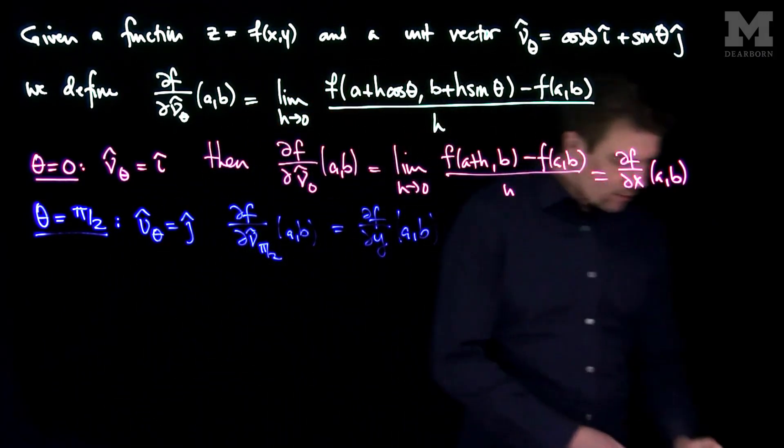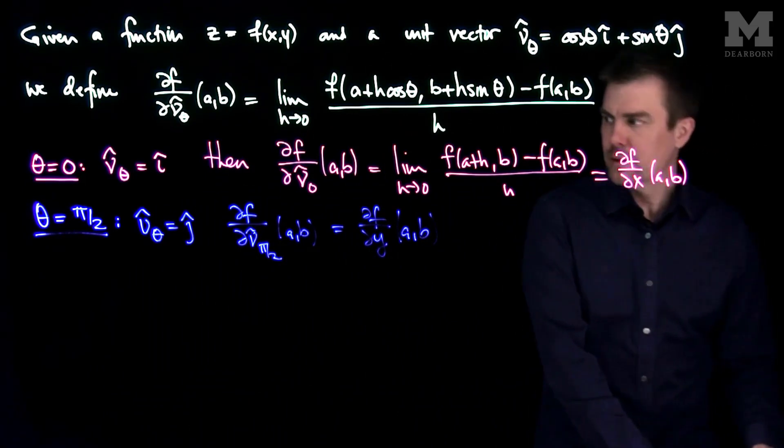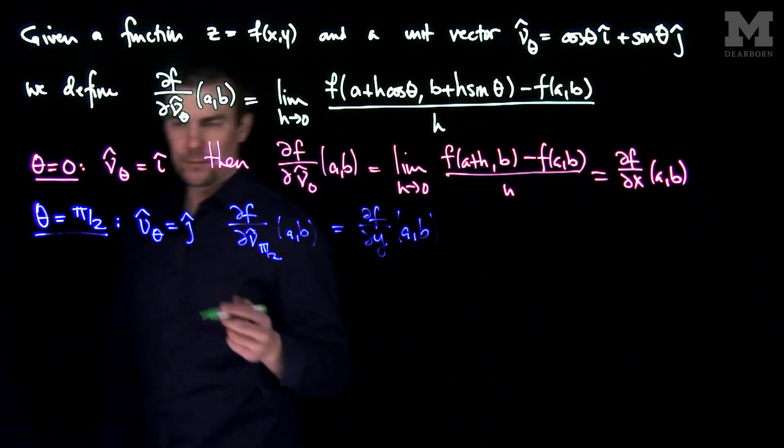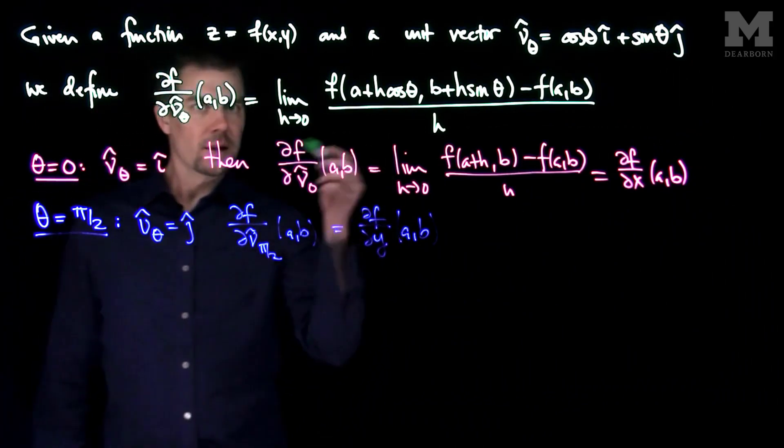Now for a general angle, an angle between zero and pi over 2, what will we get? Well, let's think about this.